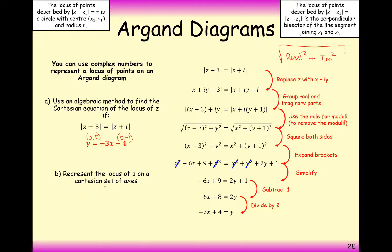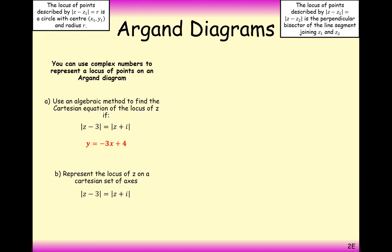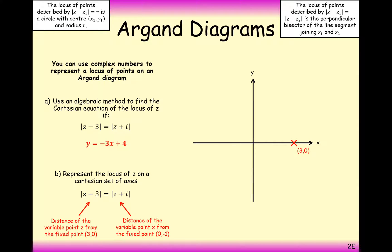Represent the locus of z on a Cartesian axis. It's the perpendicular bisector between (3, 0) and (0, -1), with a y-intercept of 4 and gradient of minus 3. If you take any coordinate along this line of locus points, the distance to both of the original coordinates will be equal — that's what the question is asking you to draw.